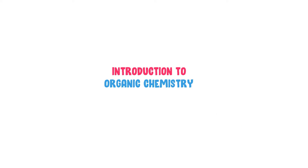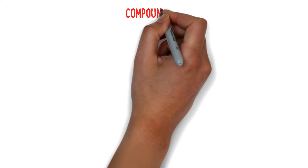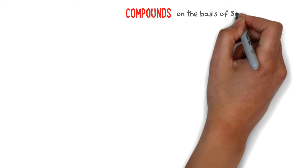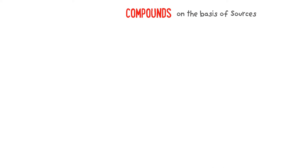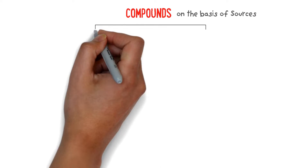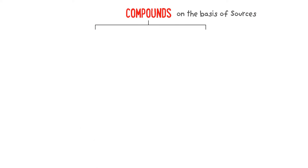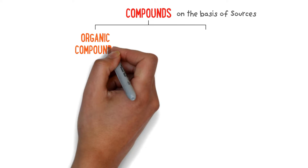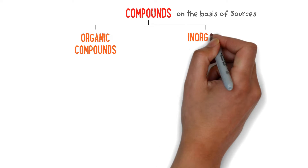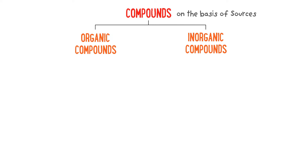Introduction to Organic Chemistry. In the past, scientists classified compounds on the basis of their sources, and they formed two main groups of compounds: organic compounds and inorganic compounds.